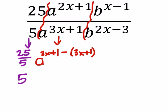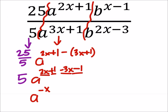So that would be a to the power of 2x plus 1 minus 3x minus 1, which would be a to the power of 2 minus 3x is negative x, and 1 minus 1 is 0. So I don't really need to show that plus 0, that's still multiplied by 5.